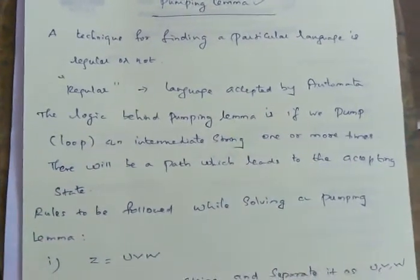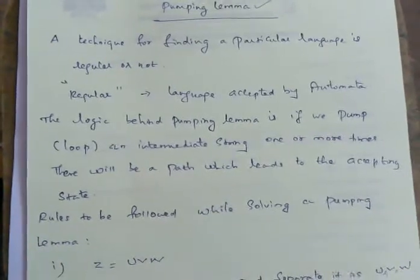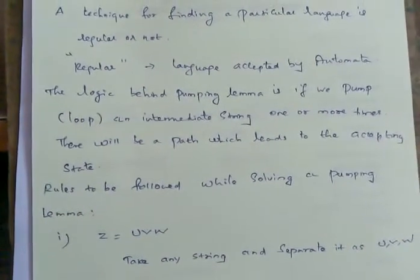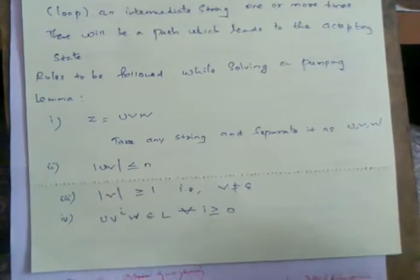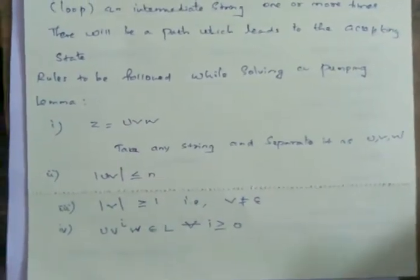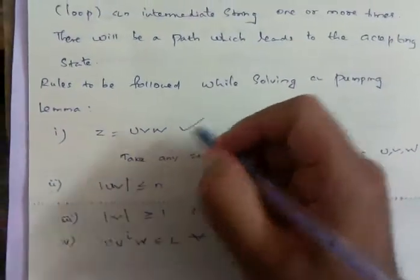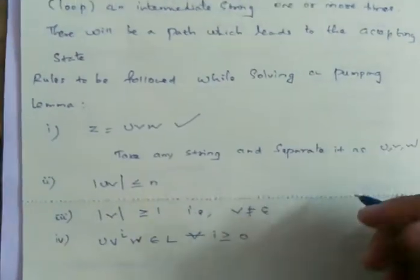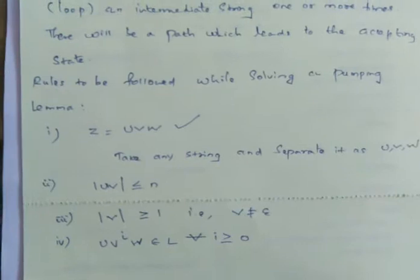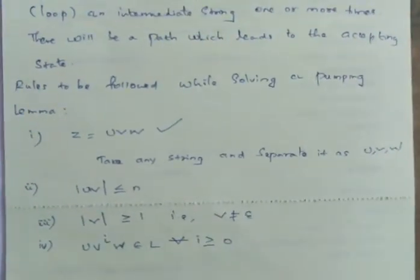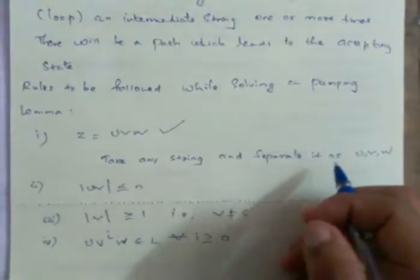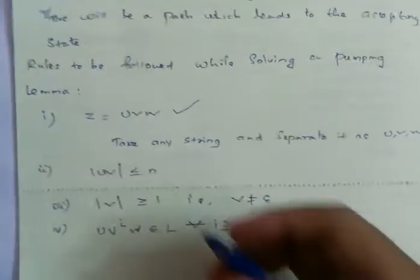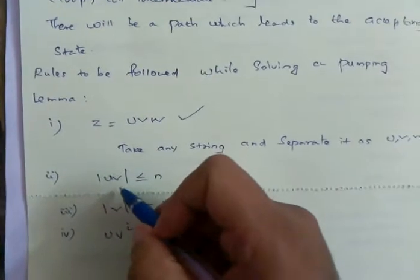To prove whether a particular language is regular or not, there are specific rules to follow. The first rule is: for a given language, take any particular string, assume it as z, and separate it into u, v, w. The solver can separate it in any form.